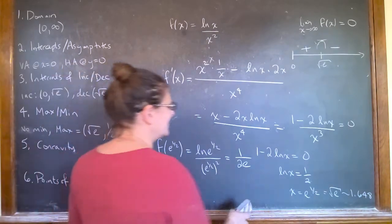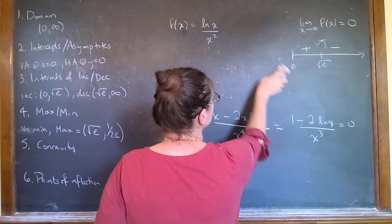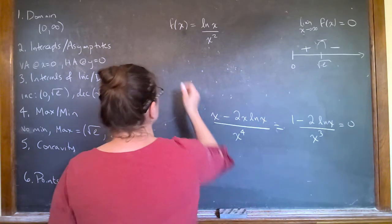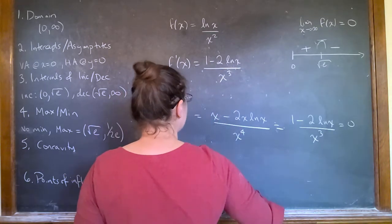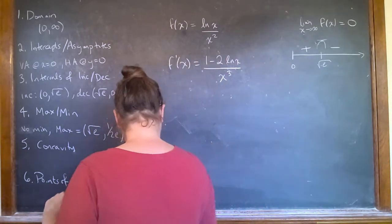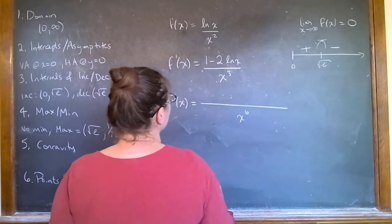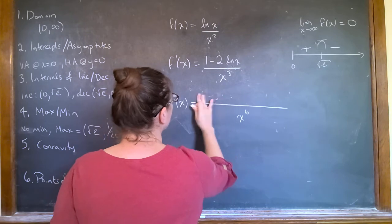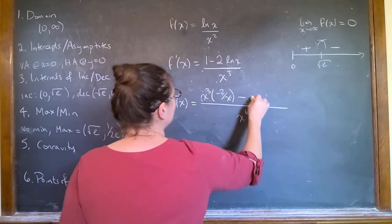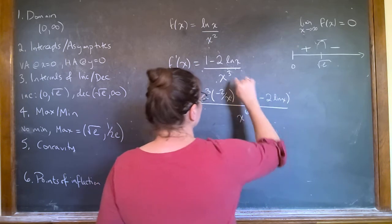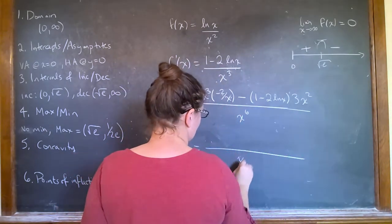Now I can go ahead. I need to do my second derivative. So I can figure out where my point of inflection is. Assuming there is one. There's probably going to be one, right? Because we're going up and then down. So my second derivative, x to the sixth here. And then it would be one minus. It would be x cubed times the derivative of this, which would be minus two over x, minus one minus two natural log of x times the derivative here, which would be three x squared.